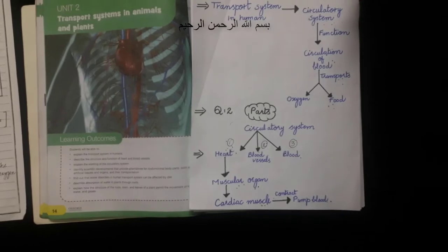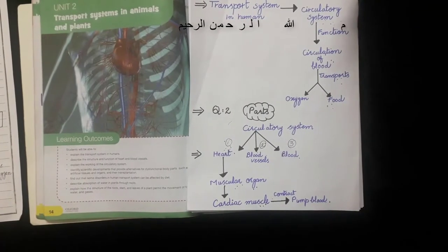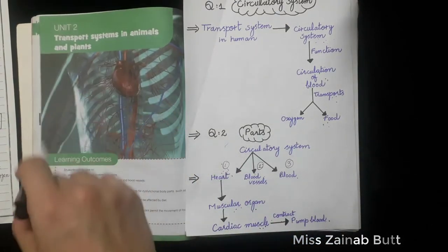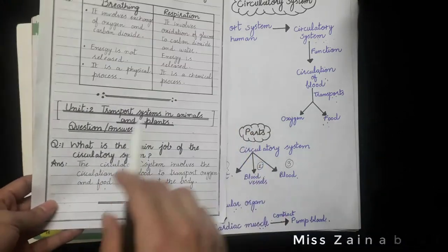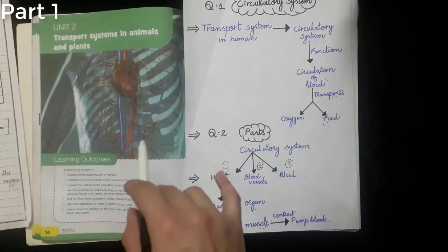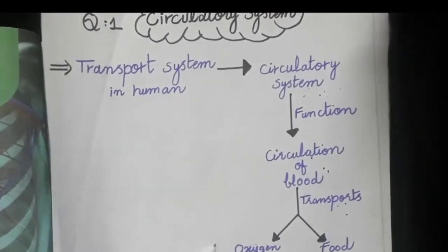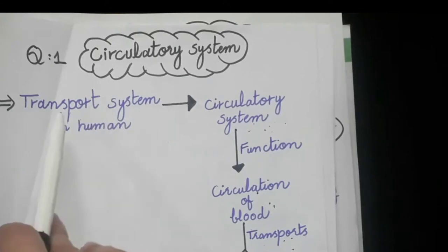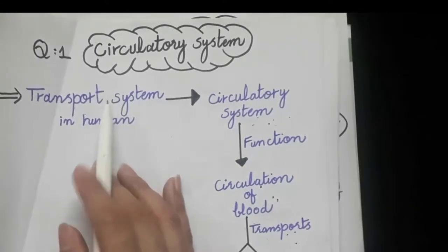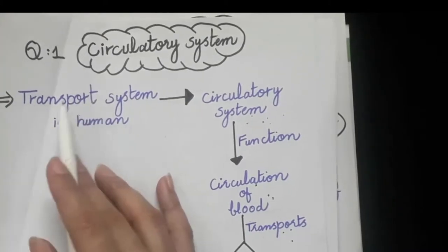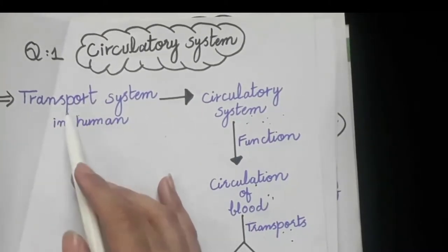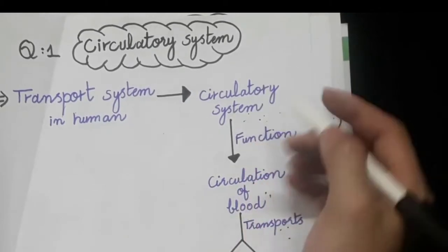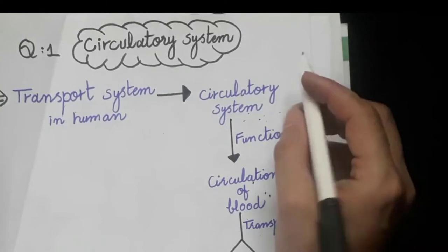Assalamu alaikum students. As you know, you have received assignment of unit number 2, transport systems in animals and plants. In this assignment, question number one is: what is the main job of the circulatory system? Before this, you must have knowledge about the term 'transport system.' A transport system is a system which helps to transport different substances inside our body. The scientific term for transportation in humans is called the circulatory system.